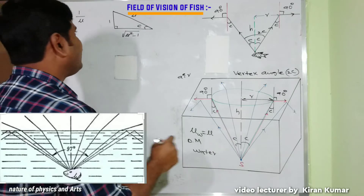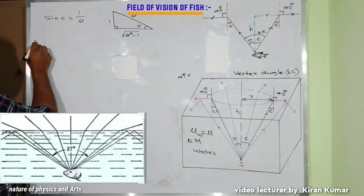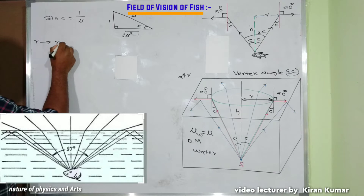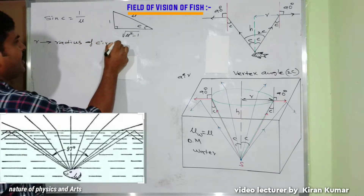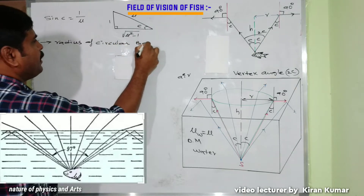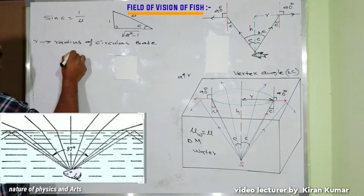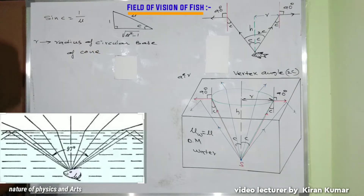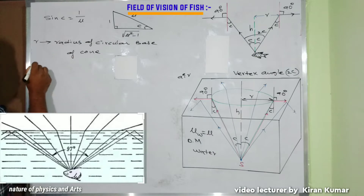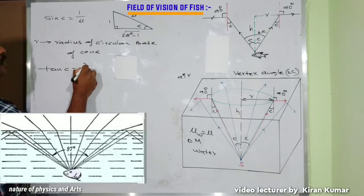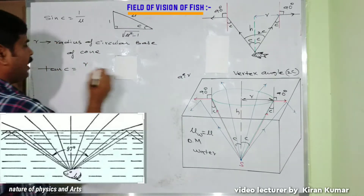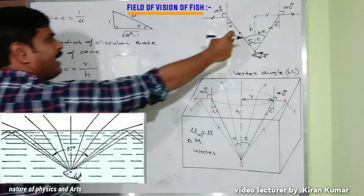We need to find r, the radius of the circular base of the cone. The half-angle of the cone is C, so from the right triangle: tan C = r / h, where r is the radius and h is the depth.